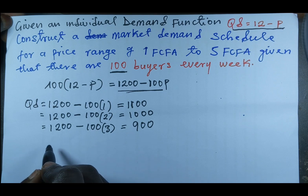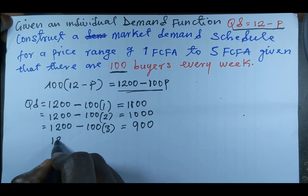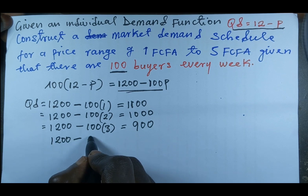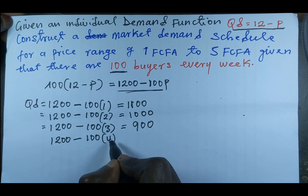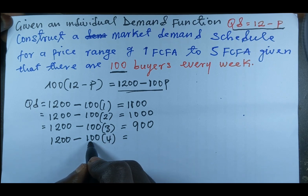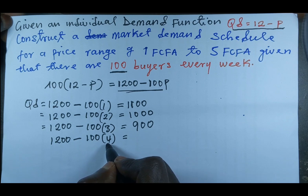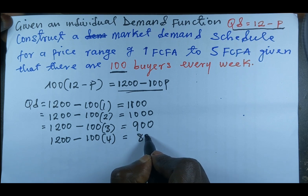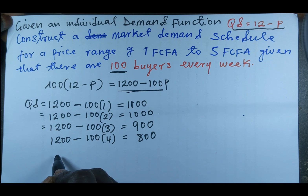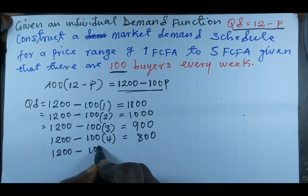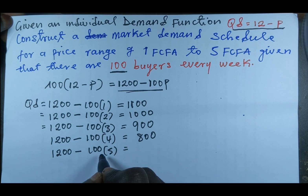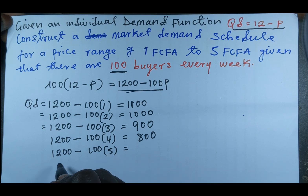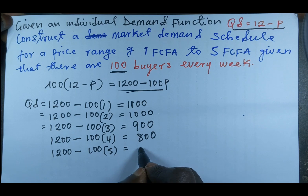At the price level of 4 FCFA, we have 1200 minus 100 × 4. Multiplying 100 by 4 gives 400, so 1200 − 400 = 800. At the last price level of 5 FCFA, we have 1200 minus 100 × 5 = 1200 − 500 = 700 as quantity demanded.